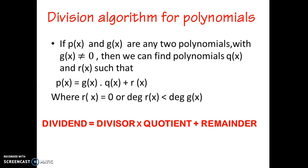This satisfies the condition where r of x equal to zero, meaning the remainder is zero, or the degree of r of x is less than the degree of g of x, meaning the degree of the remainder is less than the divisor.